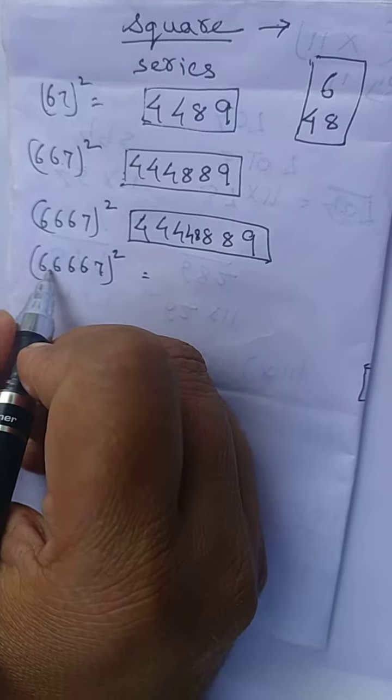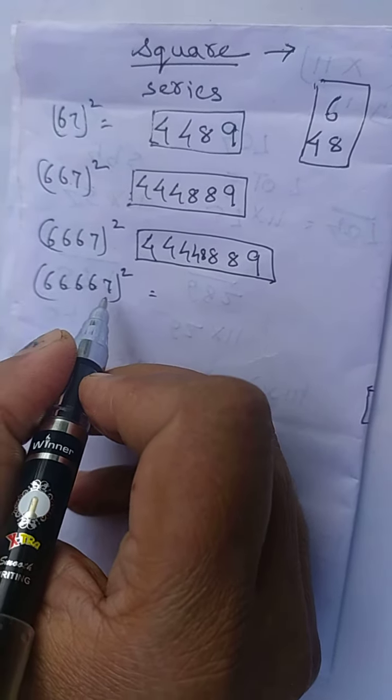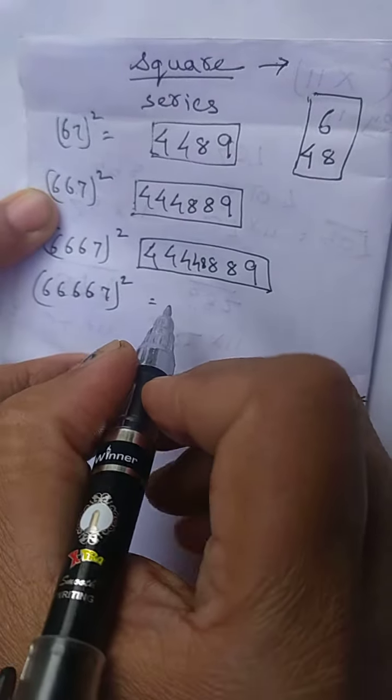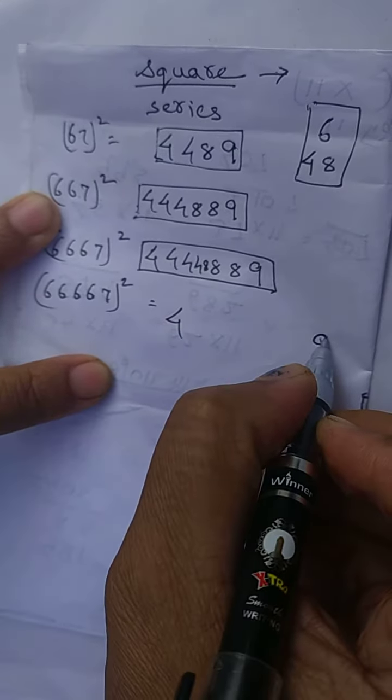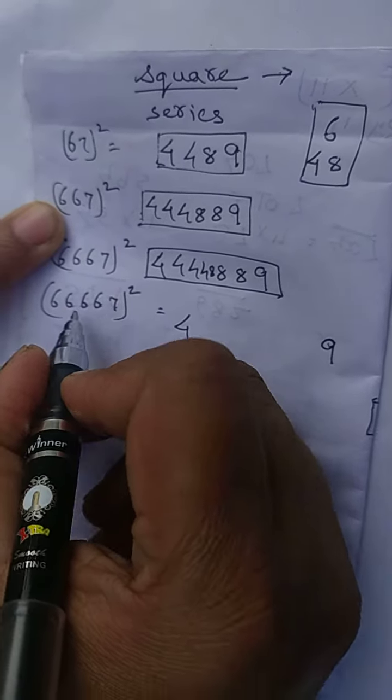If it ends in 7, write 4 and 9 because the square of 7 is 49. For four 6s, you write 48 four times: 1, 2, 3, and 4. Use your calculator and see whether the answer is right.